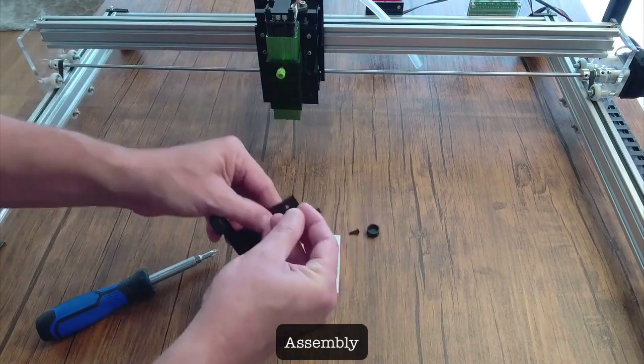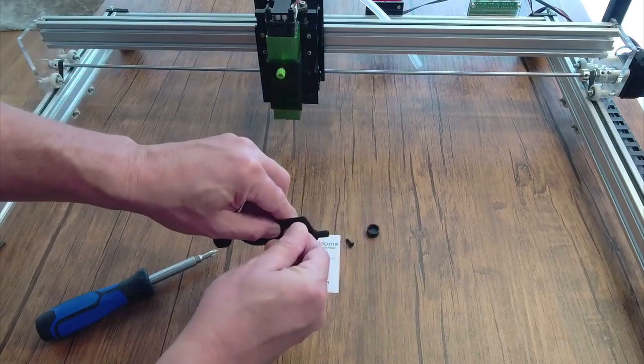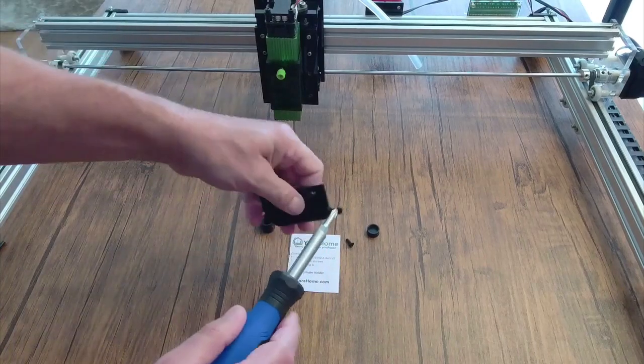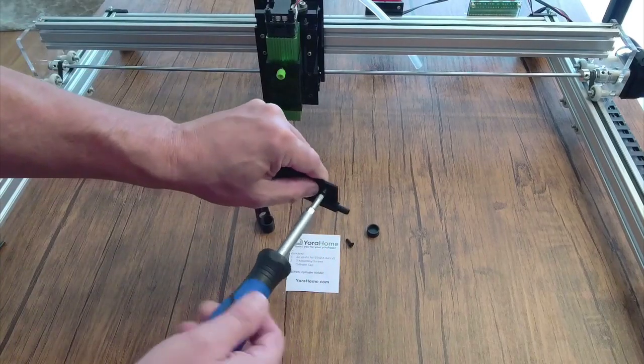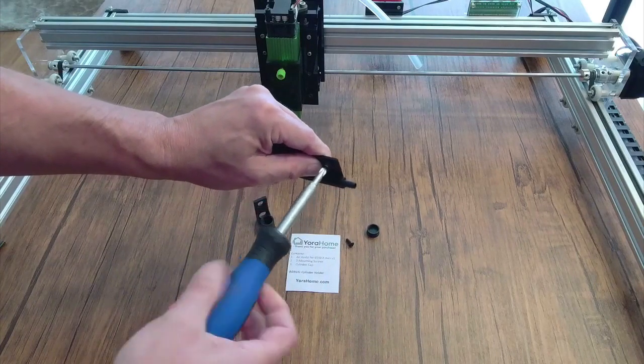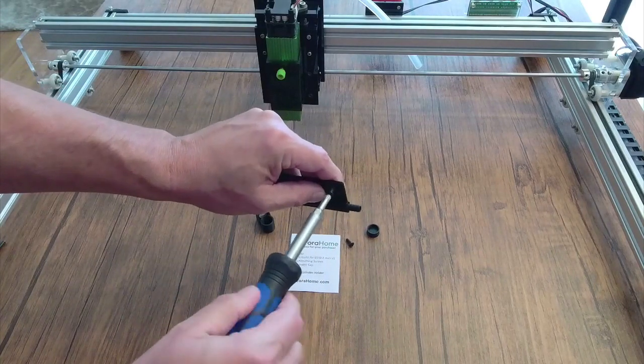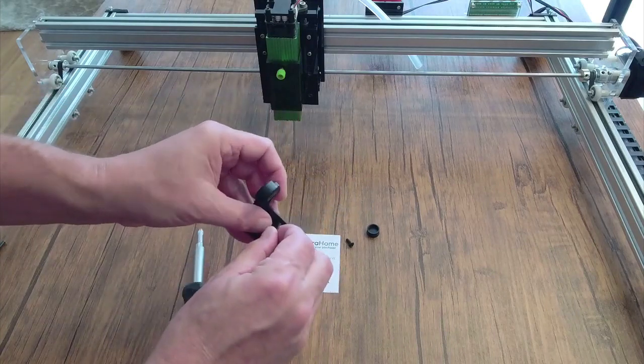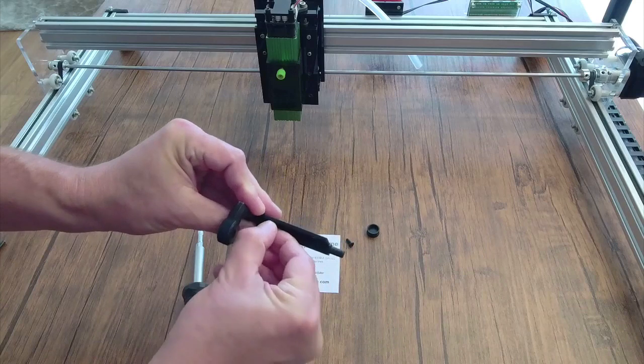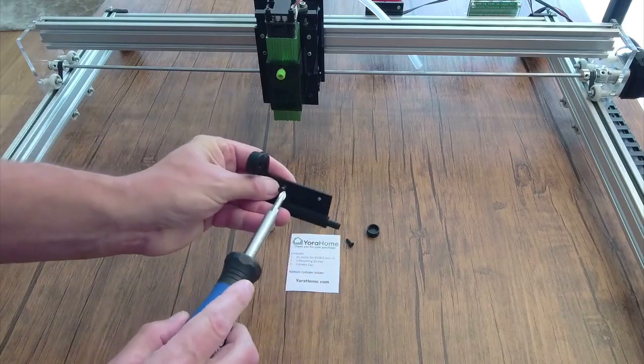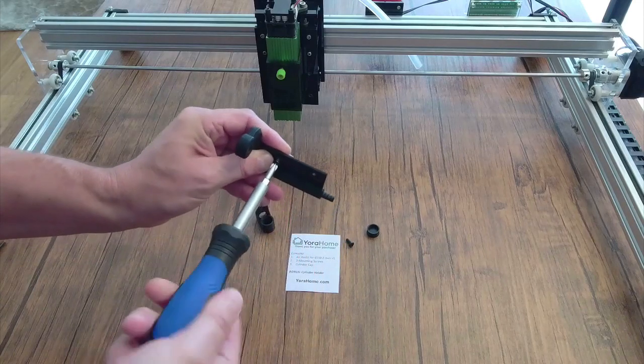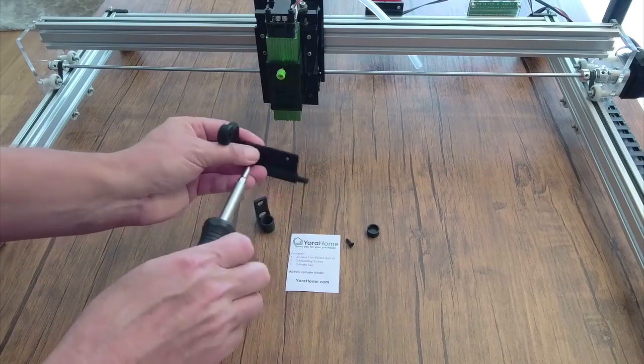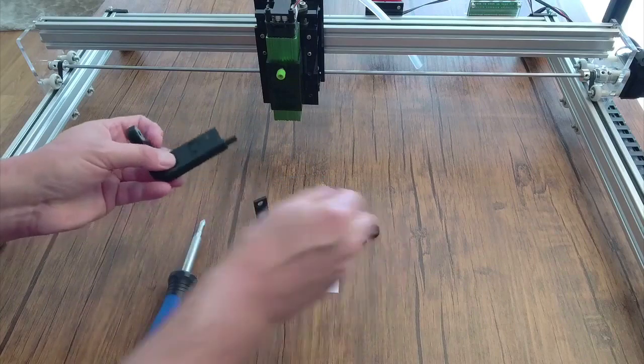The first thing we're going to want to do is get the screws in here and make sure that we have this threaded. You're going to want to put this in and run it through maybe halfway, pull it back out, and then same thing with the bottom one. This will make it easier when we're trying to install it with the threads already done.